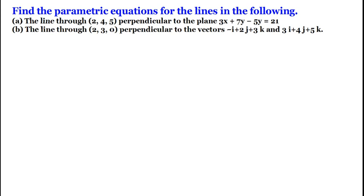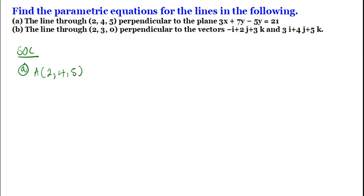For part (a), we are given a line through a point. The point given is (2, 4, 5), and the line is perpendicular to the plane 3x + 7y − 5z = 21. We need to find the equation of this line.